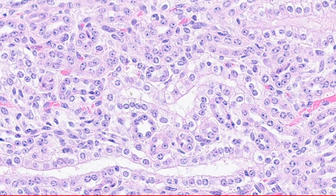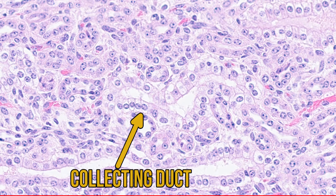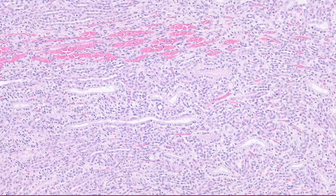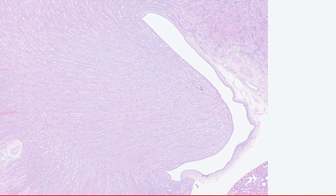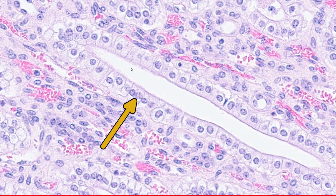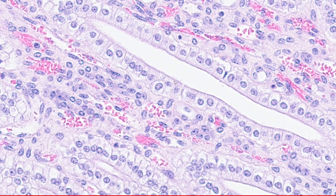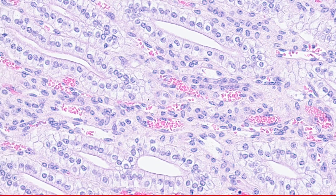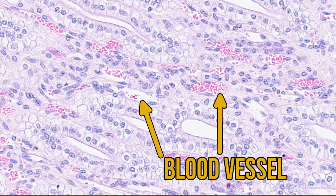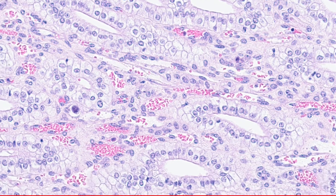Moving on to our last tubule type, the collecting duct — there's one just next to it. We have a big lumen, and lining this tubule we've got more columnar cells with quite vacuolated cytoplasm. Heading down right into the middle of the medulla, there's going to be a very large proportion of these collecting ducts with big lumens, columnar cells, and quite vacuolated cytoplasm. Interspersed with these are a few blood vessels, which may look similar to a thin descending or ascending tubule because of their endothelial lining, but they contain blood, so they're definitely blood vessels.